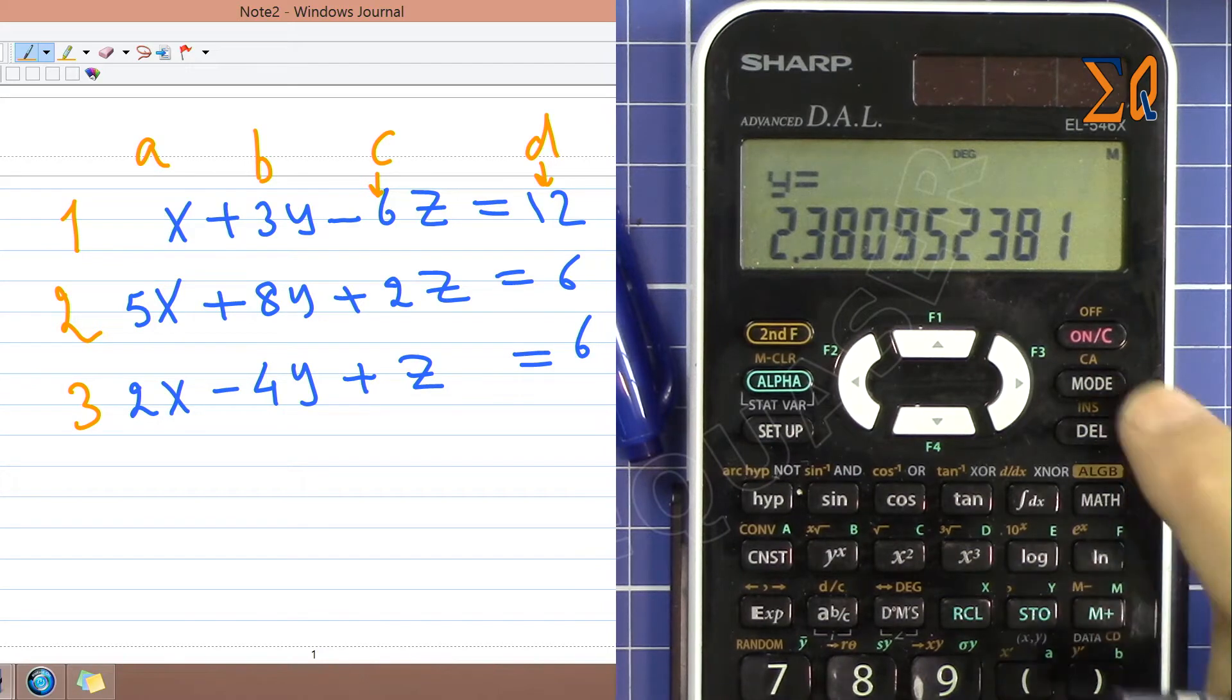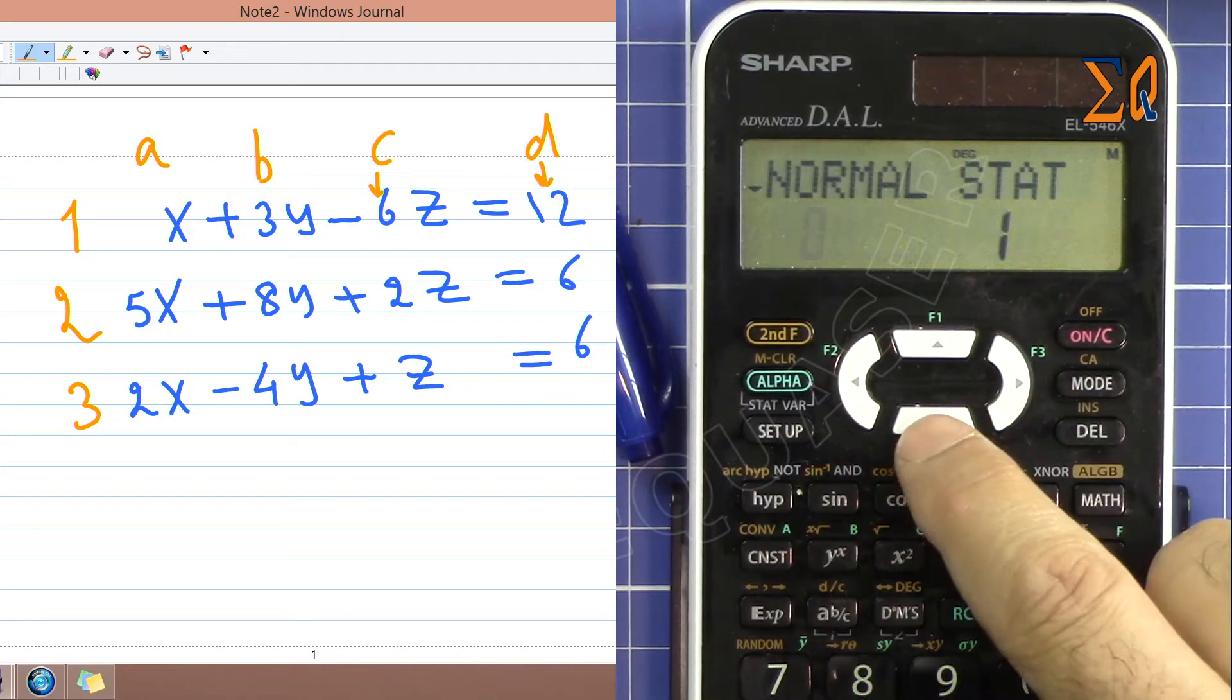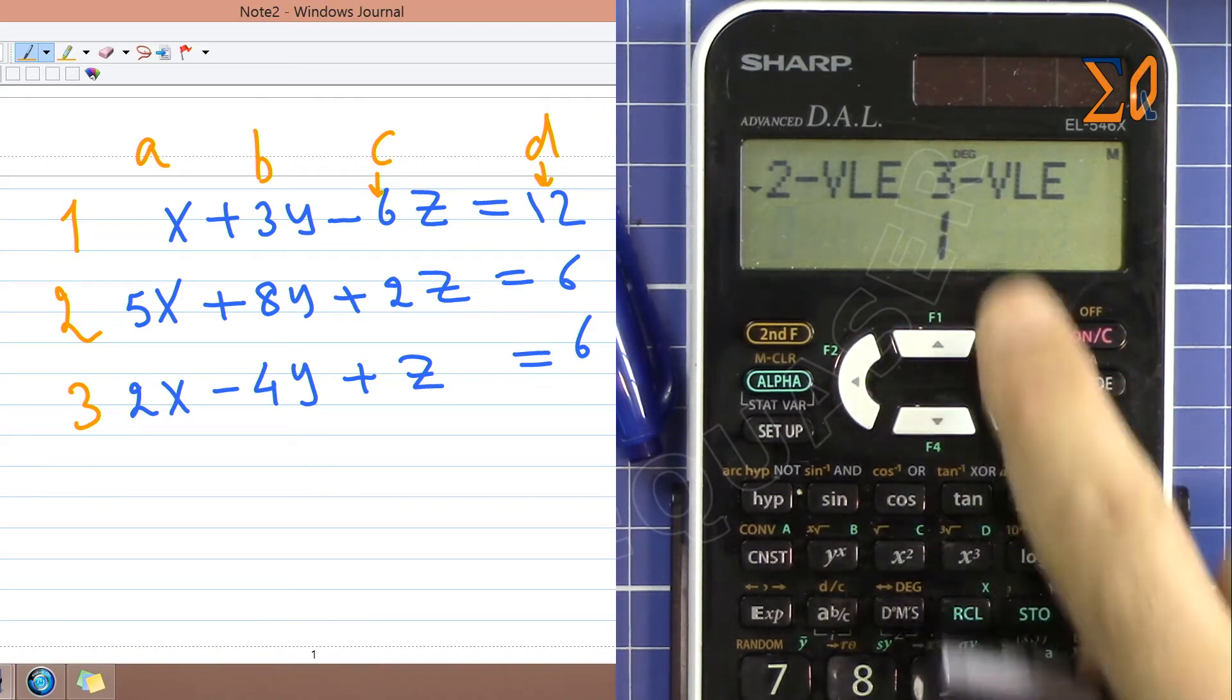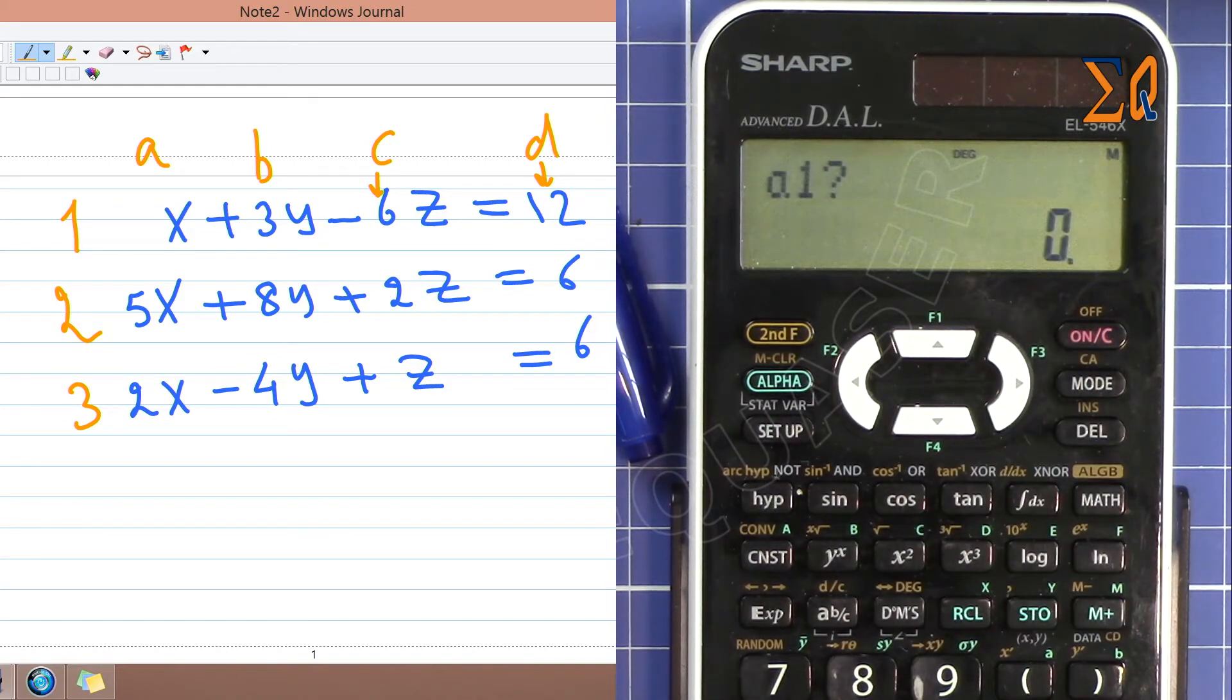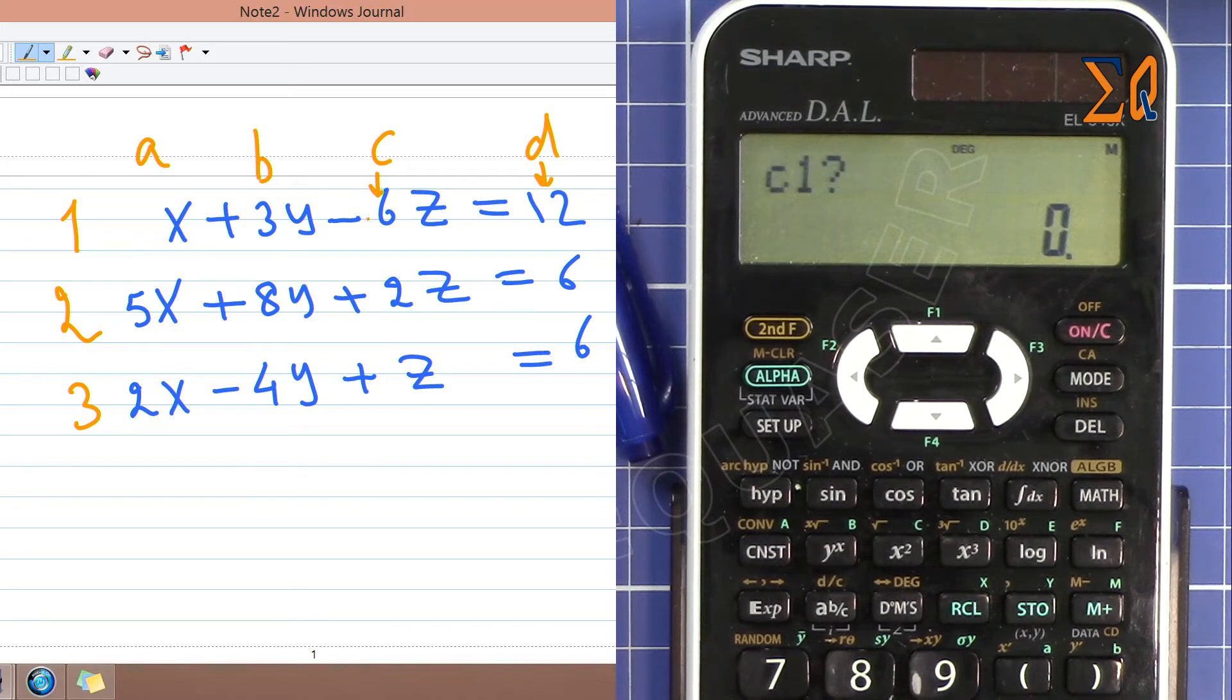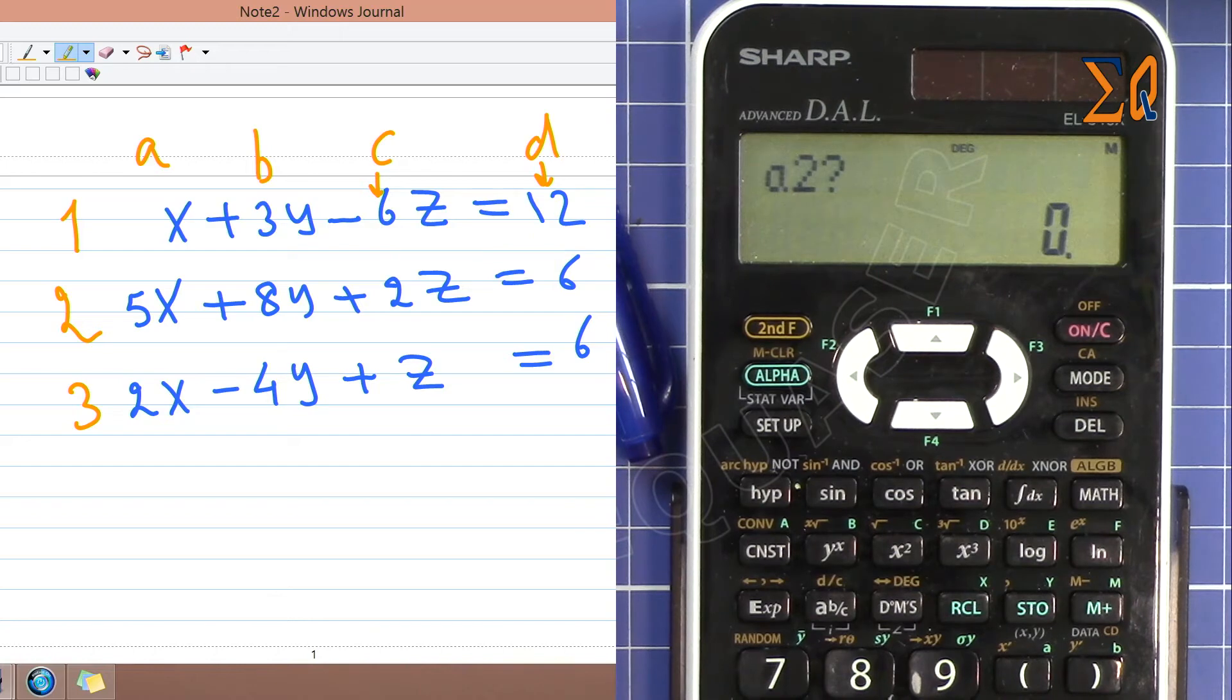So press mode and then scroll down to equation and here we have three val, so this time press 1. a1 for this equation is 1 plus equal sign. b1 is 3, and then c1 is 6, and d1 is 12.